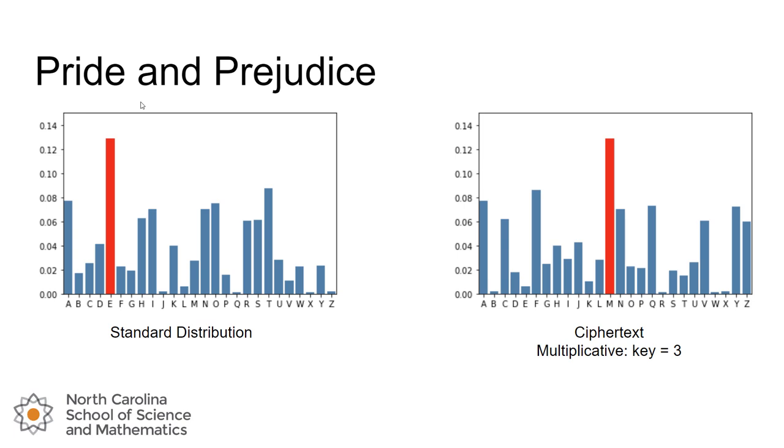We can see that while it's easy for us to identify that the M in the ciphertext likely came from the E in our plaintext, that is not really enough for us to figure out the key if we didn't already know it.